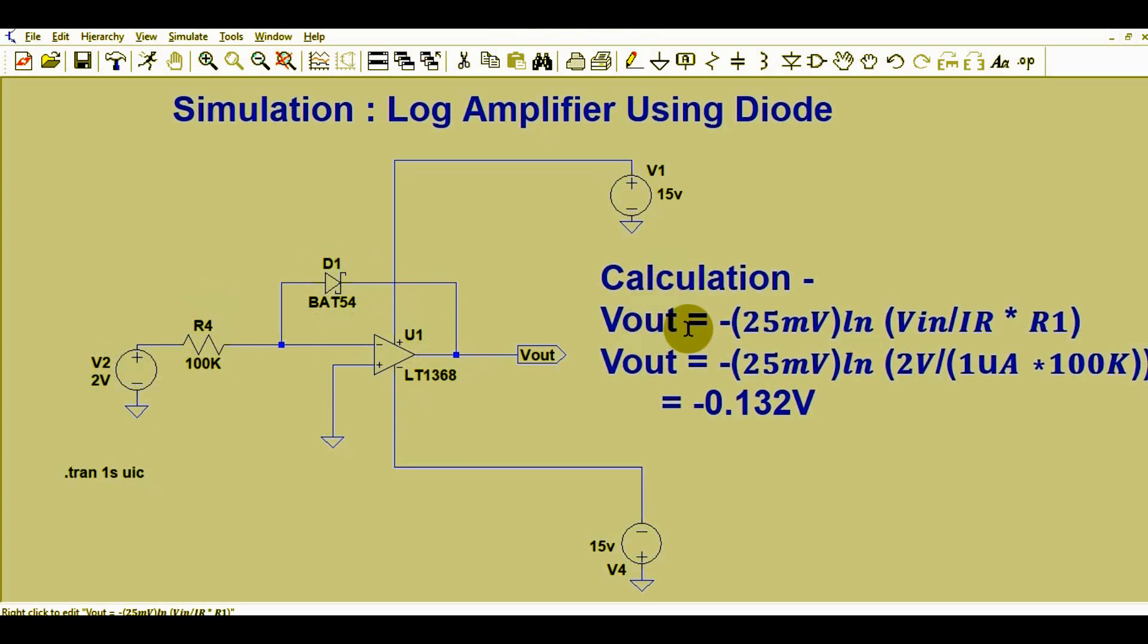We have already seen in the previous video: Vout equals minus 25 millivolts times ln(Vin divided by IR times R1). So this is minus 25 millivolts times ln, and in place of Vin you can write 2 volts.